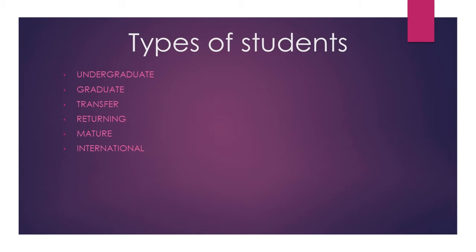For a graduate student, for you to be qualified as a graduate student, it means you have finished an undergraduate program, you've gotten your bachelor's, and you want to proceed further — either in a postgraduate diploma, a master's degree, a PhD degree, or postdoc. Anything beyond undergraduate is the graduate program.